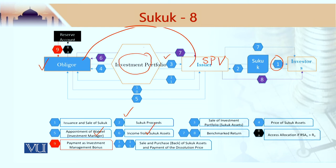When these assets are managed successfully, they generate income. If that income is greater than the benchmark return which the investors were looking for, the benchmark returns are given to the investors, and any excess goes into a reserve account. This is a feature similar to what we have studied in the context of the profit sharing investment account, which had a profit equalization reserve and an investment risk reserve.